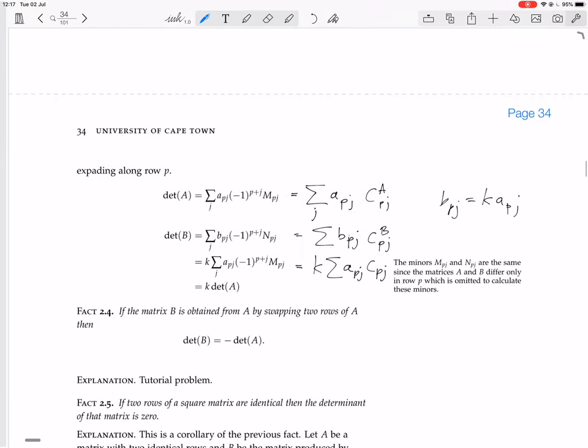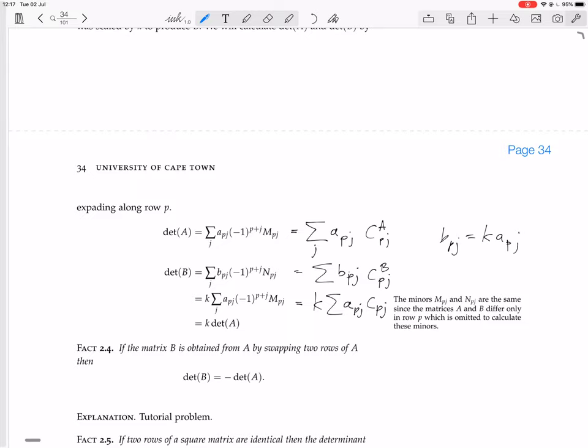So the cofactors of things in the Pth row are the same for each matrix, because everything apart from that Pth row is the same. Because remember, when you calculate a cofactor, the cofactor depends on all the rows and columns apart from the row and column you're in.